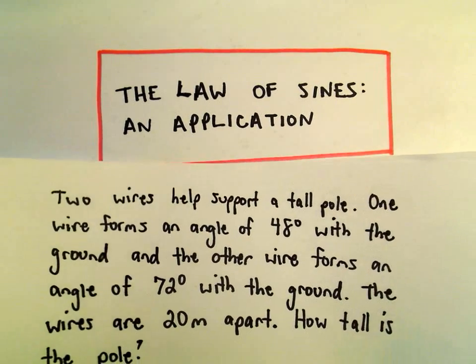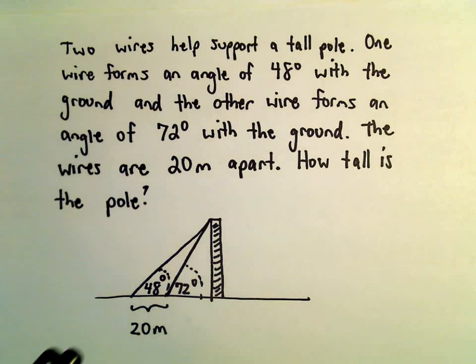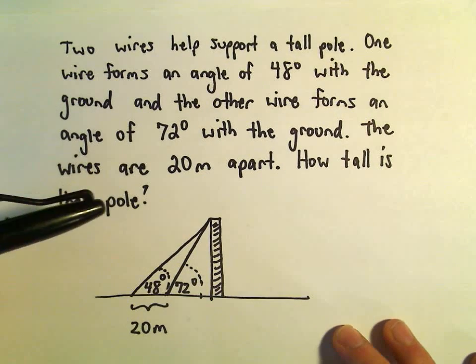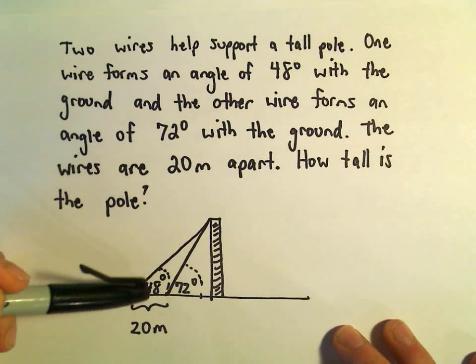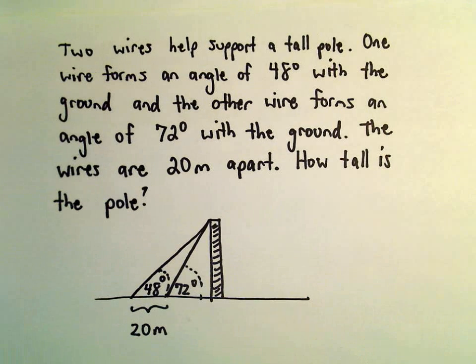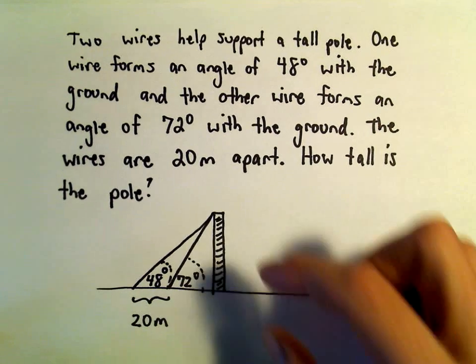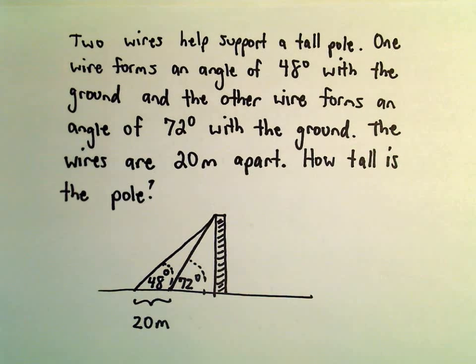Alright, so in this video we're going to do one more application using the law of sines. So suppose we've got two wires that are supporting a pole. One wire forms an angle of 48 degrees with the ground and the other one forms an angle of 72 degrees with the ground. And we know that the wires are 20 meters apart. We want to know how tall the pole is.